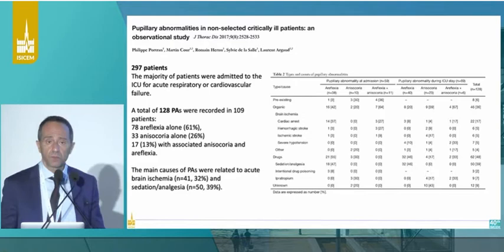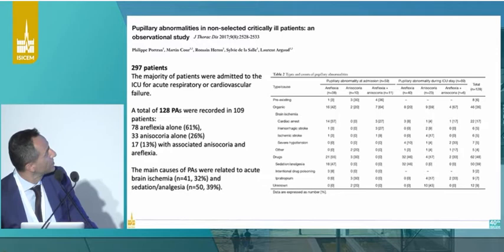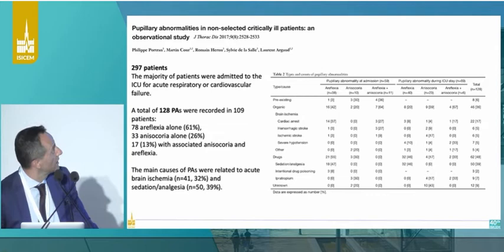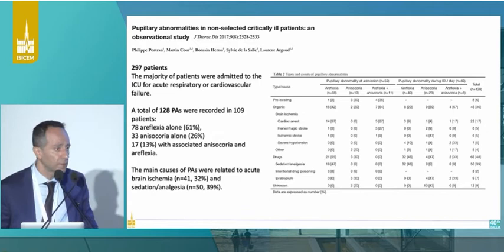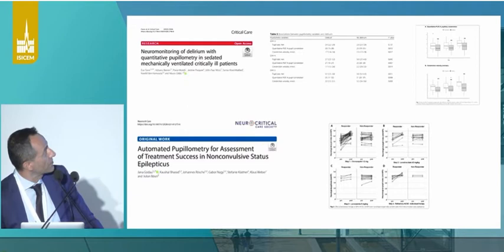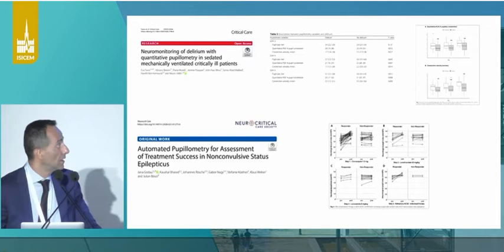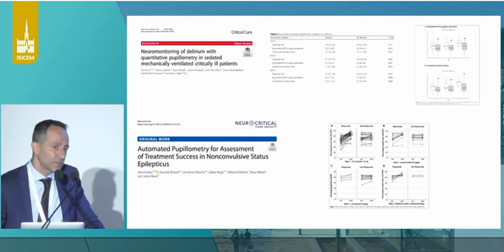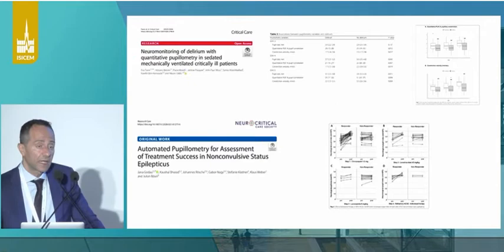Besides papers published by colleagues like Tadeusz Shah, this is a relatively recent paper showing that in the general ICU environment, in non-neural patients, there are 128 abnormal pupillometry exams recorded in 109 patients of various types. So it's important to evaluate patients neurologically, but if you are going to do so, you have to use more precise technology. These are very recent papers correlating the use of pupillometry with delirium, or using pupillometry to evaluate the success of therapy following non-convulsive status epilepticus.